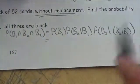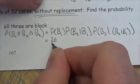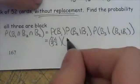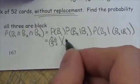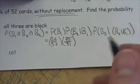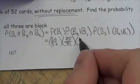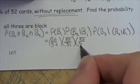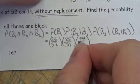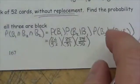The probability of getting a black card is 26 out of 52 — half the deck is black. The probability of getting another black card given the first was black is 25 out of 51, because there's one less black card and one less card total. The probability the third card is black is 24 out of 50, because now there are two fewer black cards and two fewer cards total.